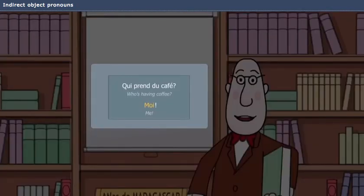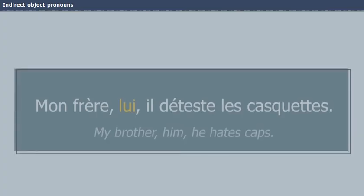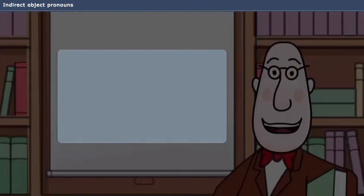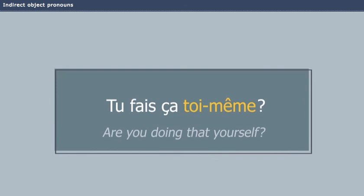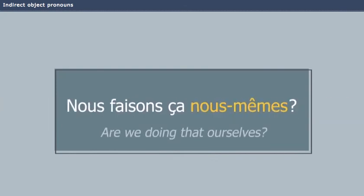You can also use disjunctive pronouns for emphasis. Mon frère, lui, il déteste les casquettes. Finally, to say myself, ourselves, etc., add même after the disjunctive pronoun. Tu fais ça toi-même? Nous faisons ça nous-mêmes?